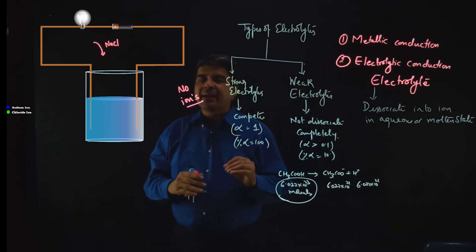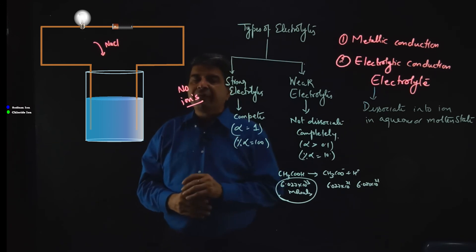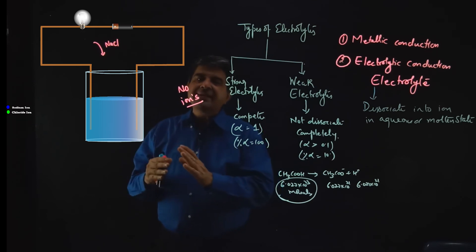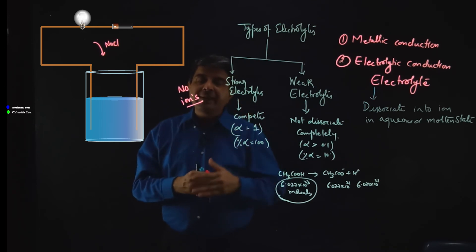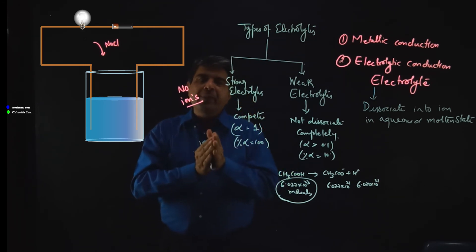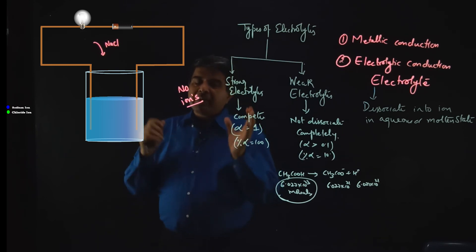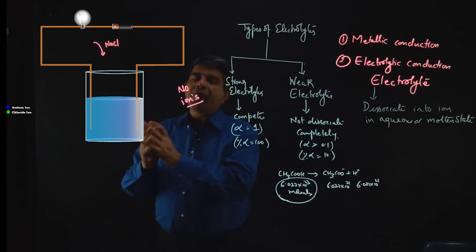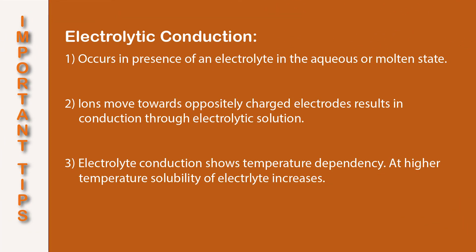This is the basic concept associated with conduction, and throughout the electrochemistry chapter this basic concept must be kept in mind because it is repeated over and over. All the concepts you will deal with in electrochemistry are somewhere interlinked with this basic concept of conduction of electricity. That was all about conduction and its types — electrolytic conduction and metallic conduction.